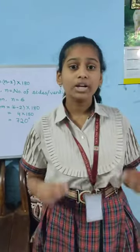Last but not the least, the sum of the exterior angles of any regular polygon is always 360 degrees, irrespective of its number of sides or vertices. We can measure this by using this model. Thank you. Have a nice day.